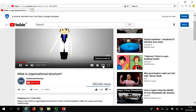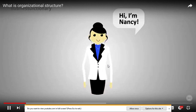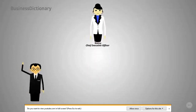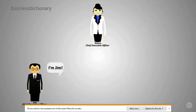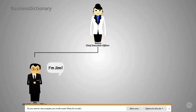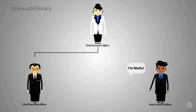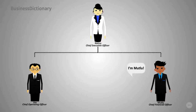Meet Nancy — she's the chief executive officer, the CEO of Awesome Corp, a company with 35 employees. This is Jim, the chief operating officer or COO. He's Nancy's second in command and reports directly to her. Jim oversees a wide variety of areas including production, sales, and marketing. Moodloo is the chief financial officer or CFO — he's responsible for the financial health of the company. Nancy, Jim, and Moodloo are Awesome Corp's executive team.